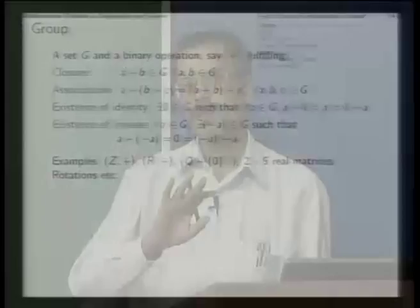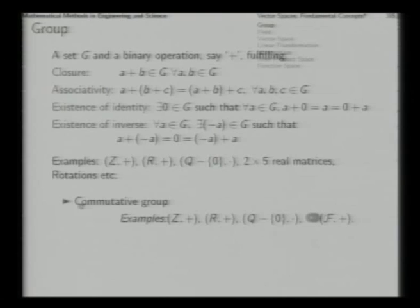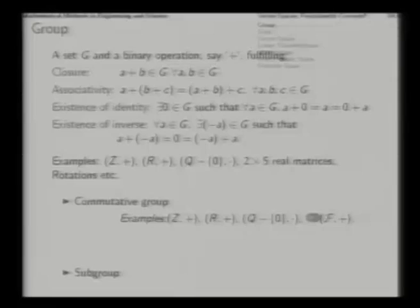If a plus b and b plus a are equal for all a and b, then in particular you have what is called a commutative group. All the previous examples are actually commutative groups, but 3D rotations are not commutative. So this is an example of a non-commutative group. There is something called a subgroup — a subset of G with the same binary operation can constitute a group itself if it fulfills the group requirements, in which case it is called a subgroup of the original group.